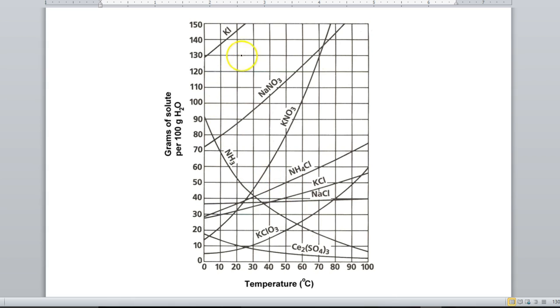Now anything above the line, so any data point up here is above the line, that is a super saturated solution. And then hopefully you can kind of see where I'm going with this. Any data point that is below the line down here, this is unsaturated.